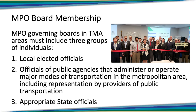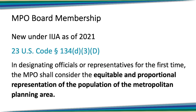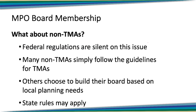Something new under the Infrastructure Investment and Jobs Act (IIJA), the newest federal reauthorization of federal transportation law: when designating officials for the first time — when a new urban area needs an MPO — they need to consider the equitable and proportional representation of the population of the metropolitan planning area. For new MPOs, you have to take into account where people live to make sure the board is representative in some fashion of the population, so that everybody feels they have a seat at the table and their voice is heard.